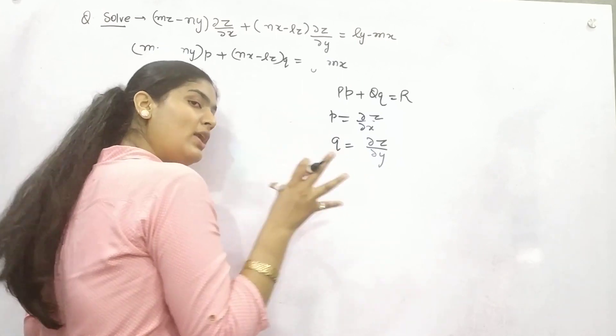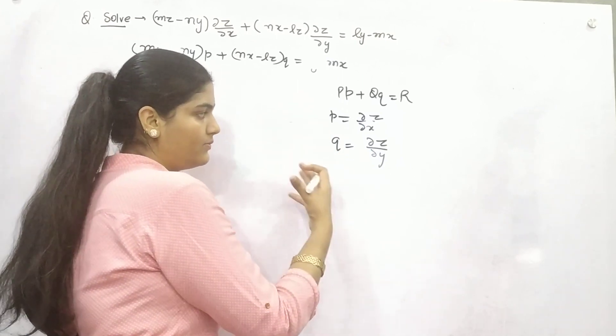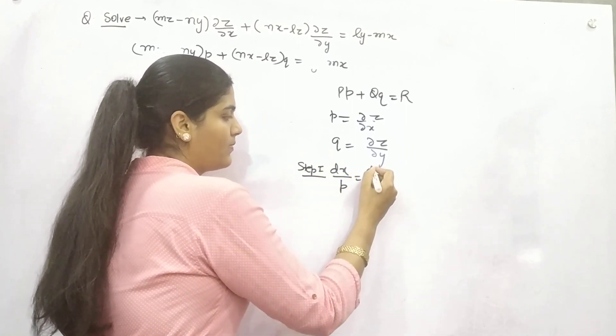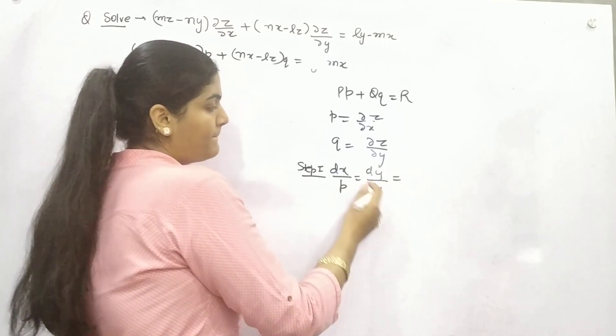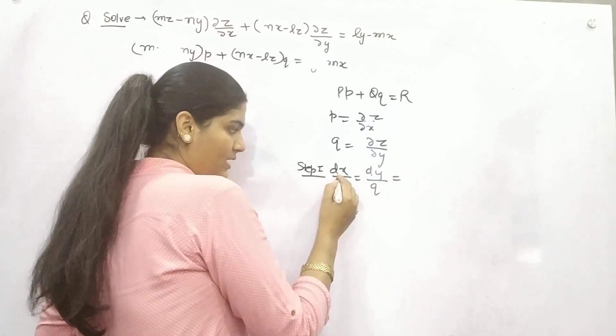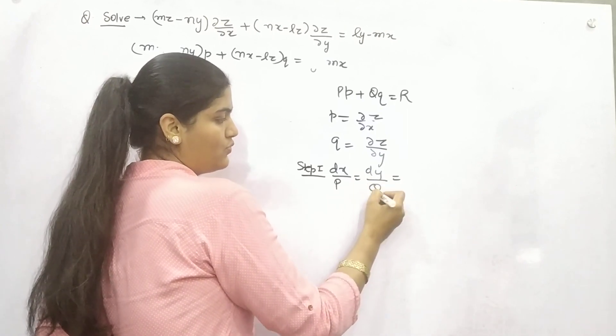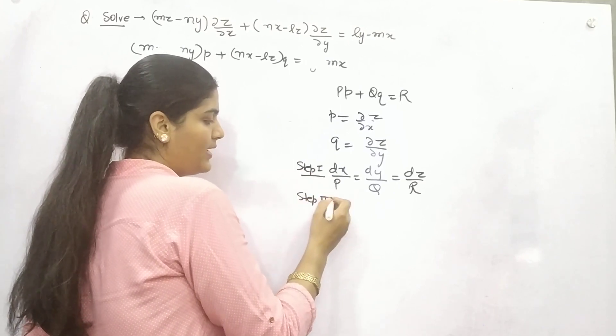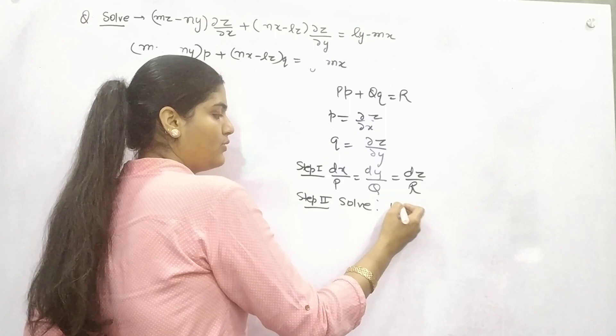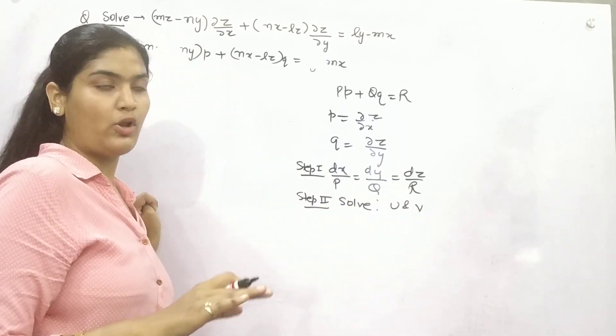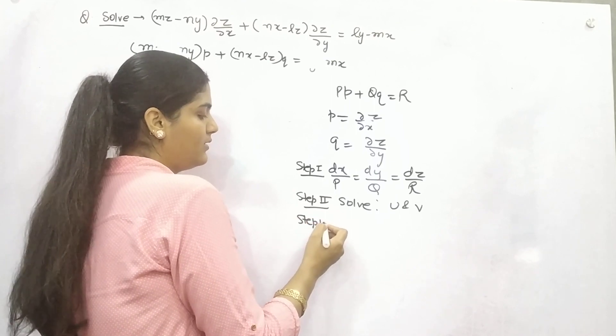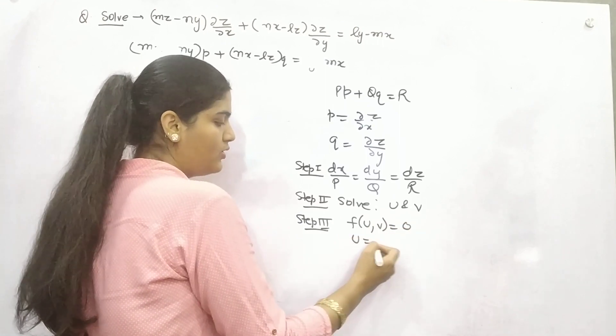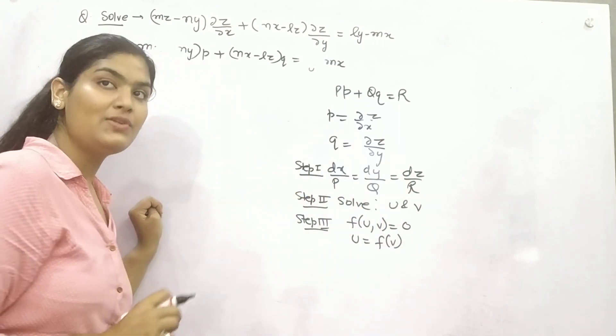Now what are the three steps we're going to follow? Step number one: putting it in this form - dx/P = dy/Q = dz/R. Thereafter we need to solve the equations and get two functions without any differential operator, U and V. And in step three, your complete solution will be F(U,V) = 0 or U = F(V). These are the three steps.